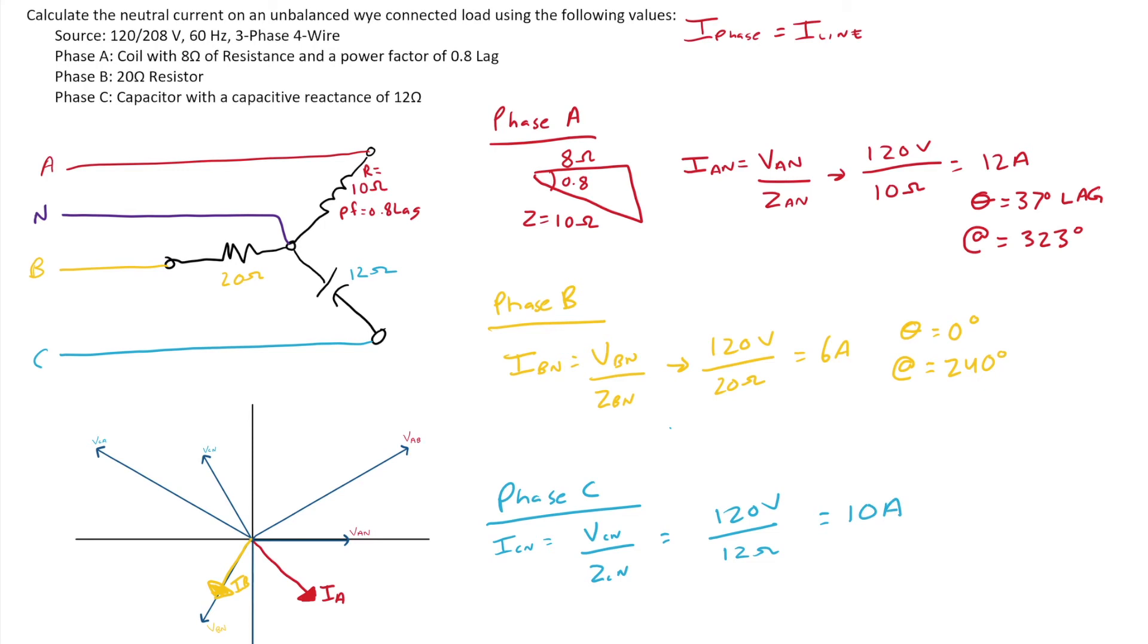Now our phase angle. Well, a capacitor we know has a phase angle, a theta of 90 degrees, and the current would lead the voltage.